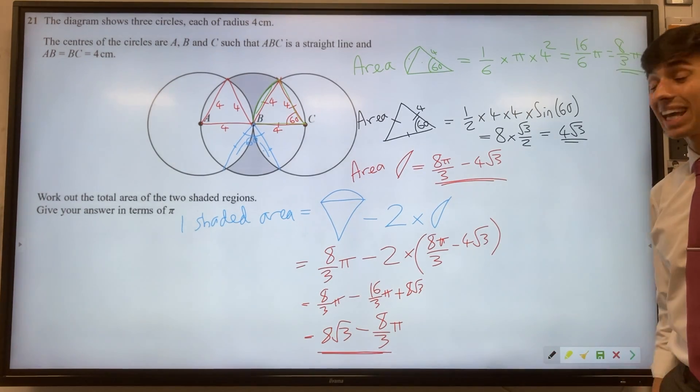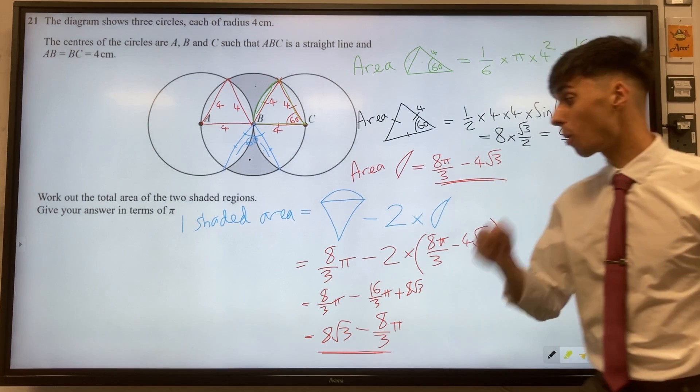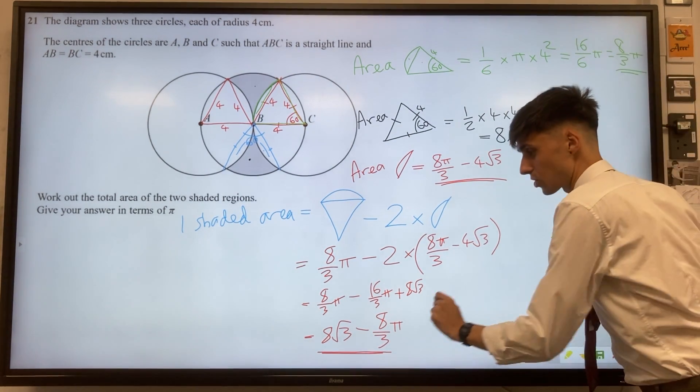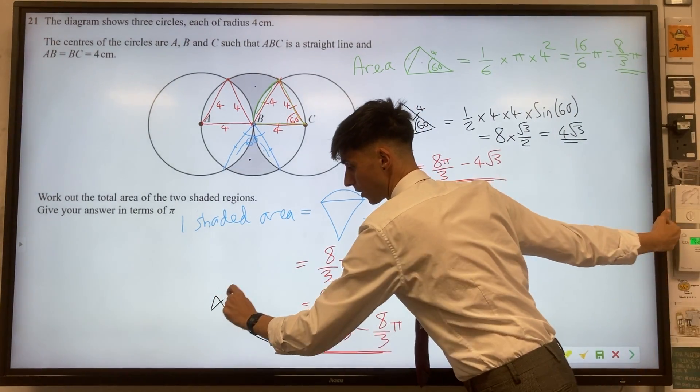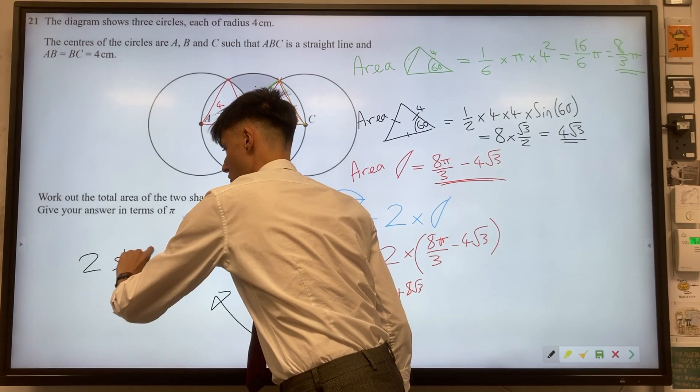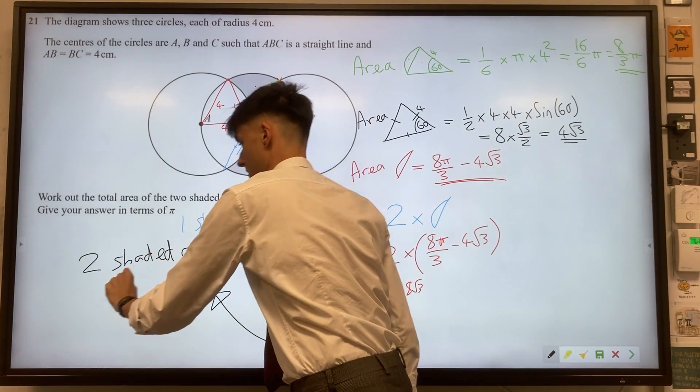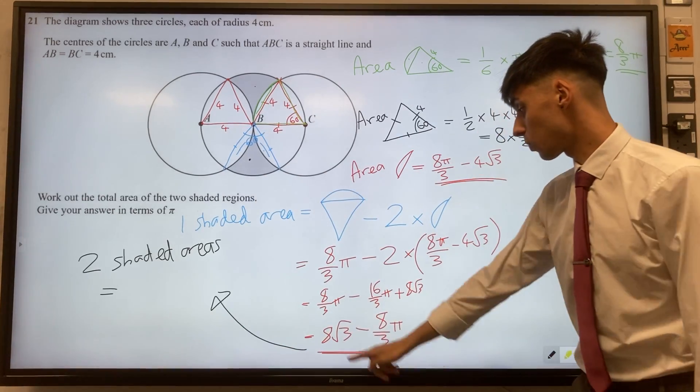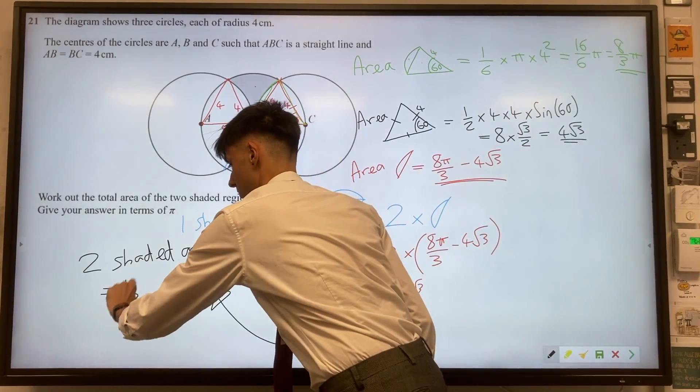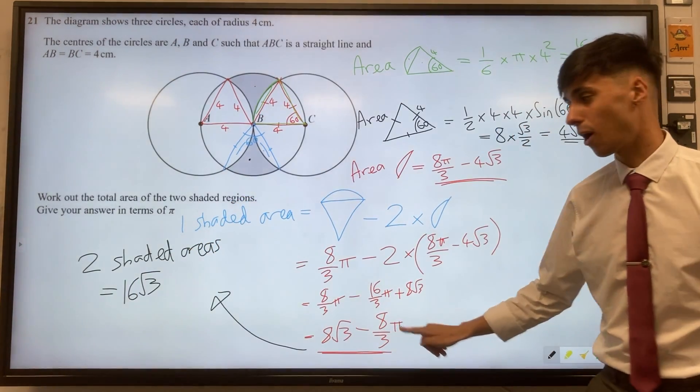That gave us one of those shaded areas, but we'd like both top and bottom, so we need to make our answer twice as big. We want two shaded areas, so making everything twice as large, we're going to get 16√3 - 16π/3.